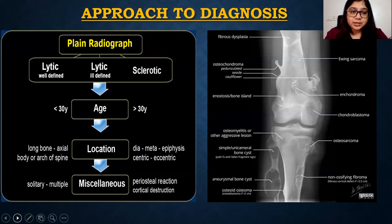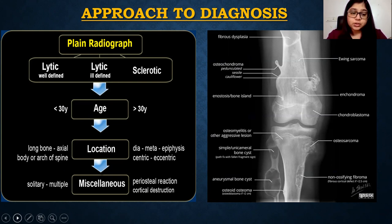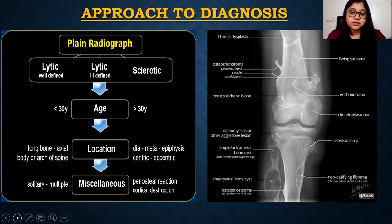Approach to diagnosis: whenever there is a lesion on a plain radiograph, the approach is based on whether the lesion is lytic or sclerotic, then based on the age of the patient, location of the lesion, and other miscellaneous characteristics like periosteal reaction and cortical destruction.